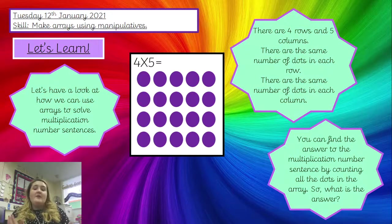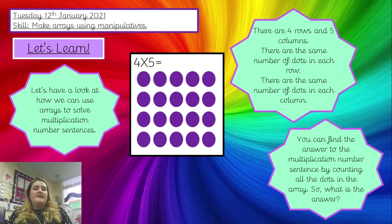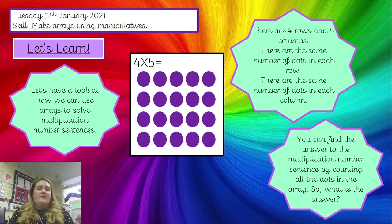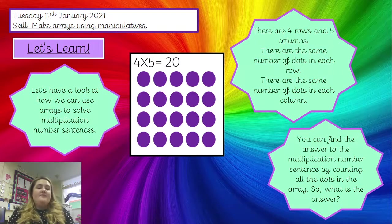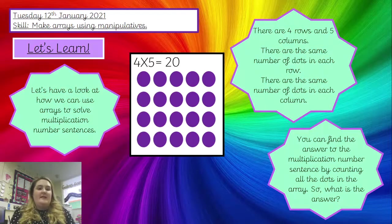We know they're equal — there's the same number of dots in each row, and the same number of dots in each column. When we've counted all of those dots and added them all together, we have got twenty. So the answer for four times five — four lots of five — is twenty.